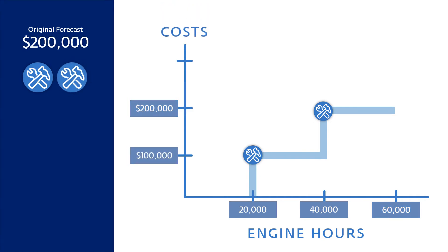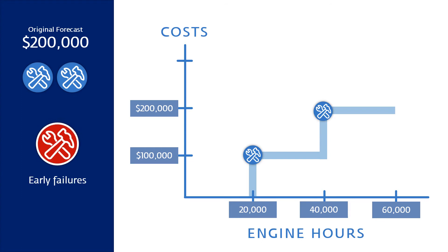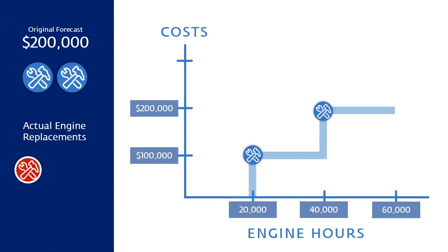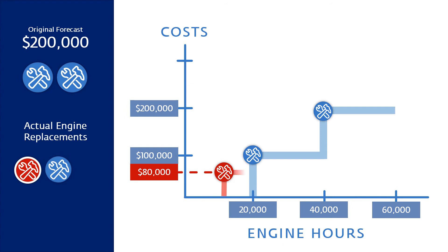But what happens when early failures are introduced? What if the first engine needed to be replaced at 15,000 hours, but only costs $80,000? If we only look at its current status, we could assume that everything is on track. In fact, we would be tracking under budget.